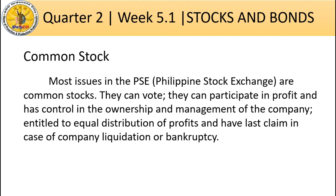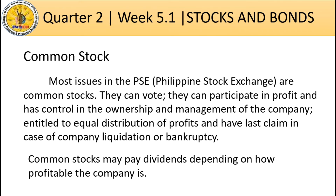Common stockholders are entitled to equal distribution of profits and have last claim in case of company liquidation or bankruptcy. Common stock may pay dividends depending on how profitable the company is — the higher the company's profit, the higher the value of your share.